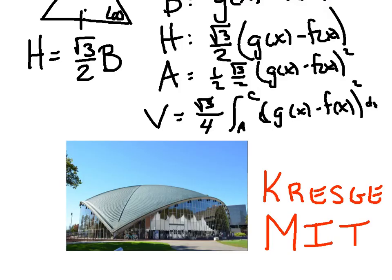One last thing before we wrap up: this building I've actually seen in person is called the Kresge Center, located right on the MIT campus. Hopefully you can see that the cross-sections are not triangles but rectangles — the cross-section is largest at the top and they get smaller and smaller right down to a point. It's a great example of a real-life structure whose volume has cross-sections that are rectangles. Hopefully you did okay today — we look forward to some practice tomorrow. Have a great night.